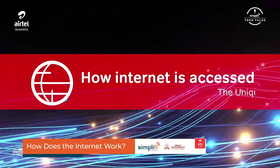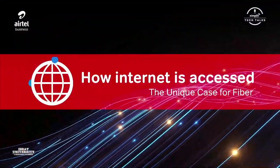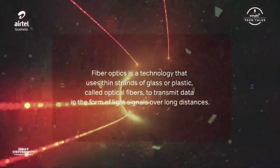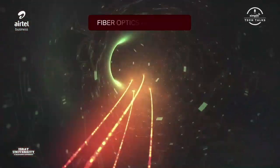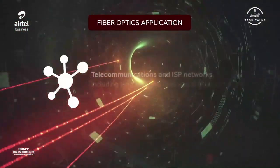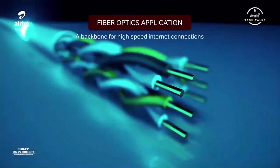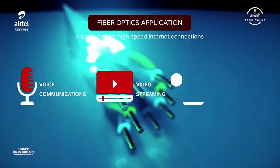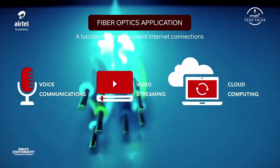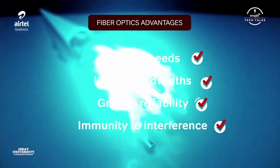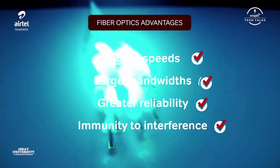How the internet is accessed — the unique case of fiber. Fiber optics is a technology that uses thin strands of glass or plastic called optical fibers to transmit data as light signals over long distances. It's widely used in telecommunications and ISP networks including long-haul, metropolitan, and local area networks in homes, offices, and data centers. Fiber serves as a backbone for high-speed internet, voice communications, video streaming, and cloud computing. Fiber provides higher speeds, larger bandwidths, greater reliability, and immunity to interference.